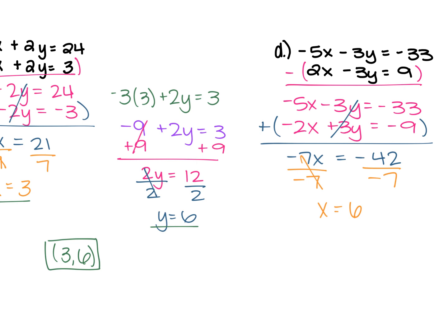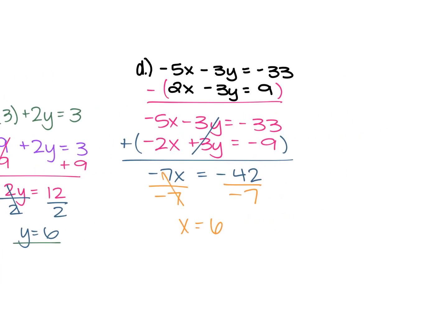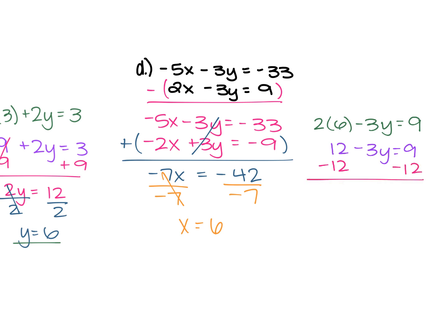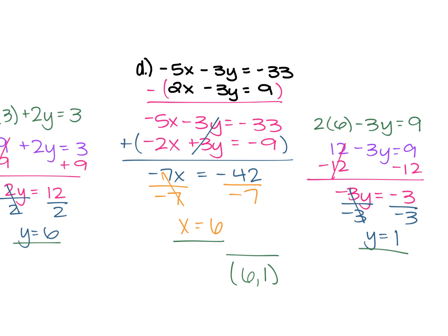If x is 6, plug it into one of the original equations and solve for y. Using the bottom equation with smaller numbers: 2 times 6 minus 3y equals 9. 2 times 6 is 12. Subtract 12 from both sides to get negative 3y equals negative 3. Divide each side by negative 3 and y equals positive 1. So x is 6 and y is 1 — the solution is (6, 1).